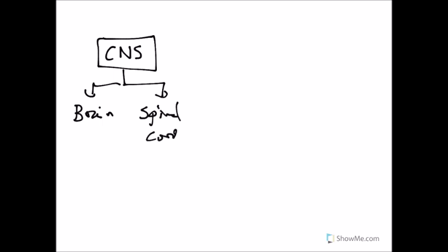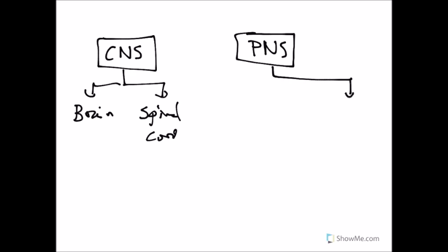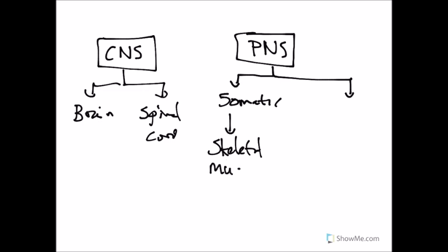The other part is the peripheral nervous system, or PNS. The peripheral nervous system is broken down into two individual parts. One of which is somatic. The somatic nervous system deals exclusively with skeletal muscles — voluntary control of skeletal muscle.